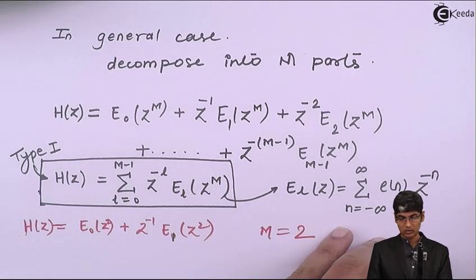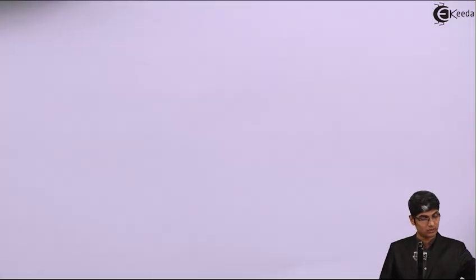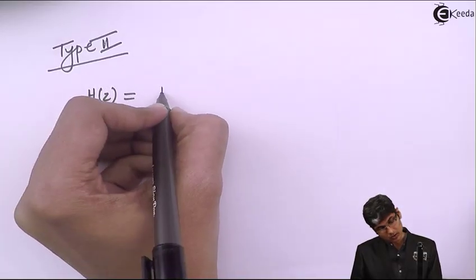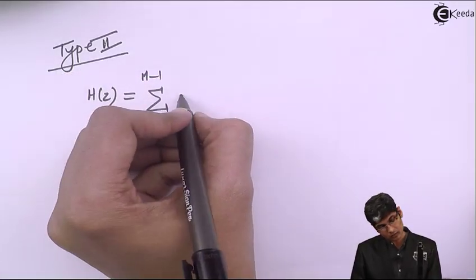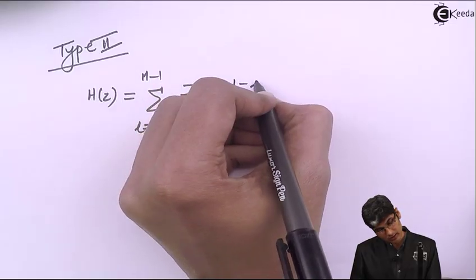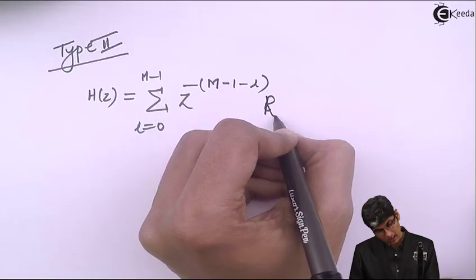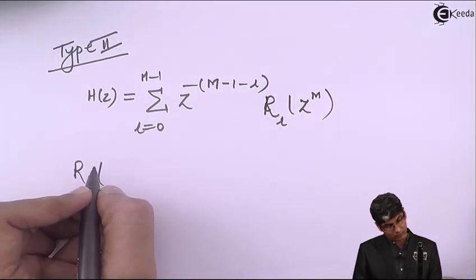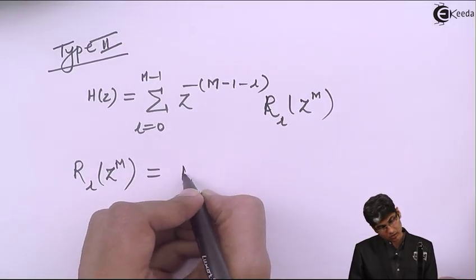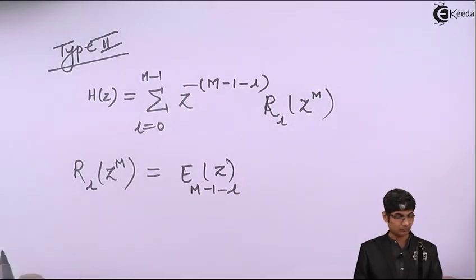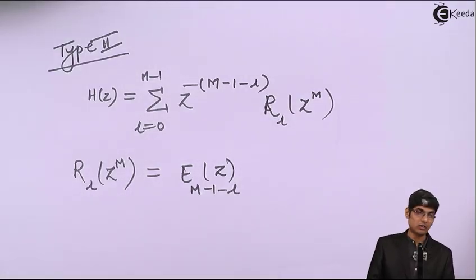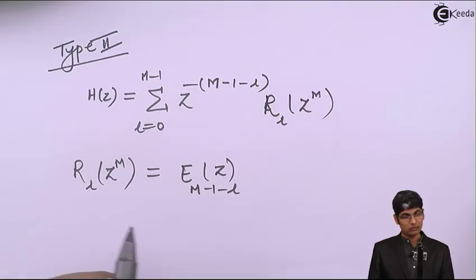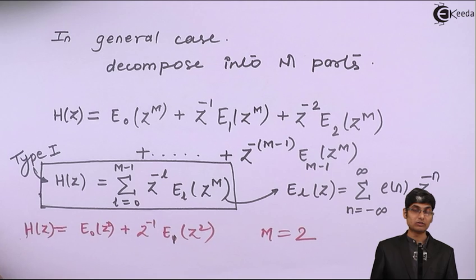We also have Type 2 polyphase decomposition, which is just a rearrangement of terms. It is written as H(z) = summation from l=0 to M−1 of z raised to −(M−1−l) times R_l(z^M), where R_l(z^M) is defined as E_{M−1−l}(z). So we have both Type 1 and Type 2 polyphase decompositions.